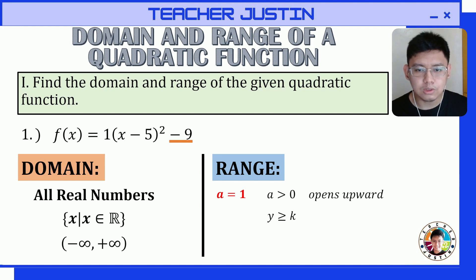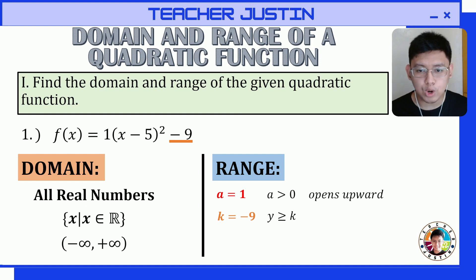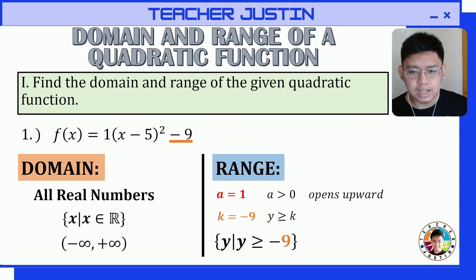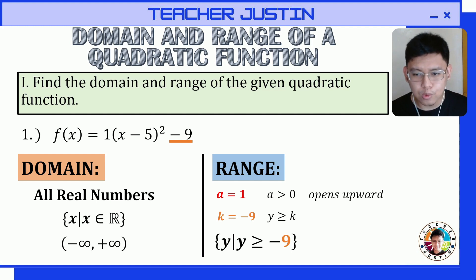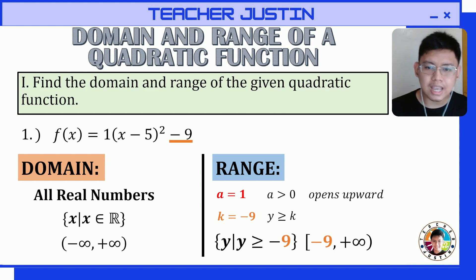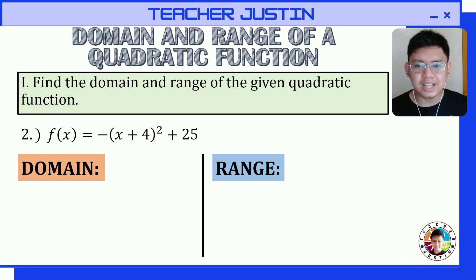Since it opens upward, our value of y will be greater than or equal to k, and our k here is equal to negative 9 — we get that from the vertex form. So all numbers greater than negative 9 will be our value for y. Our answer is: y such that y is greater than or equal to negative 9, or in interval form from negative 9 to positive infinity. That is our domain and range for this quadratic function.